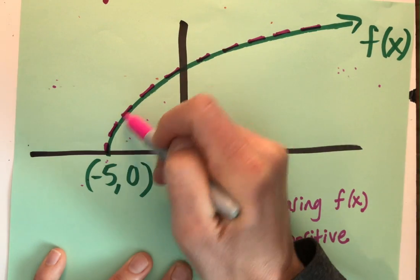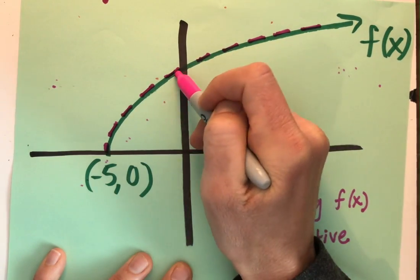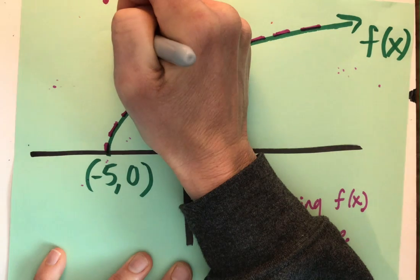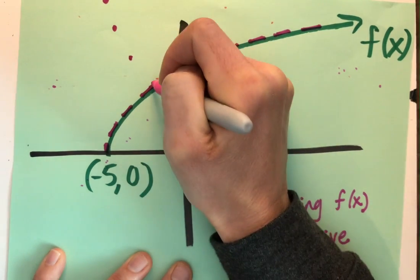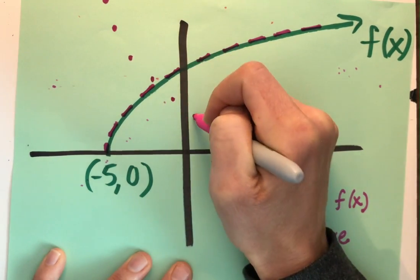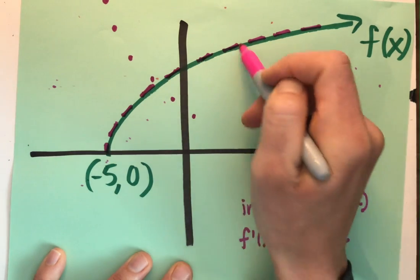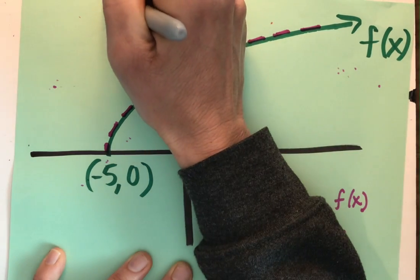The next slopes are getting smaller. Smaller, smaller, smaller, smaller, smaller, smaller. The rest of these slopes are getting closer and closer to zero.